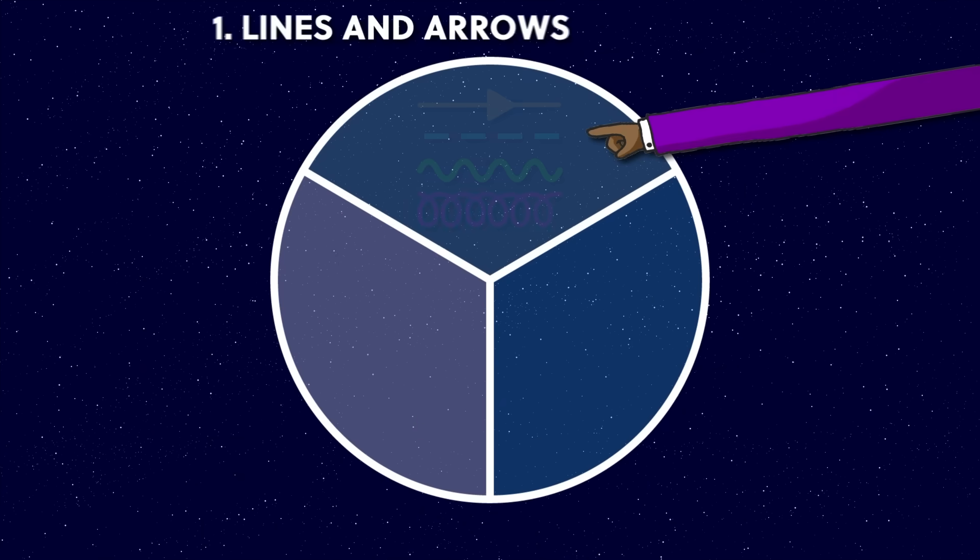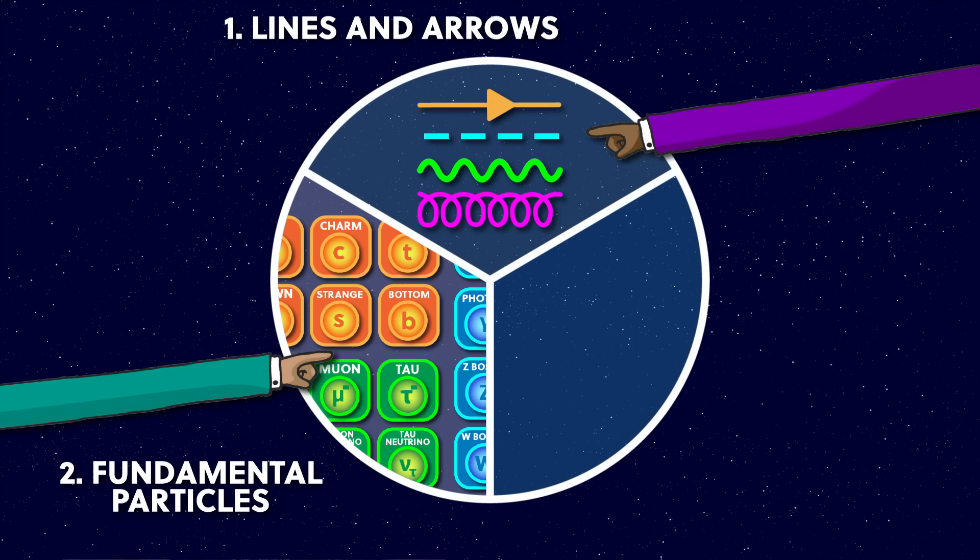So now we've covered part one and part two, what the squiggly lines mean, and what all the particles are. This is enough to be able to read Feynman diagrams and make sense of what's going on, so let's apply this knowledge with some examples.